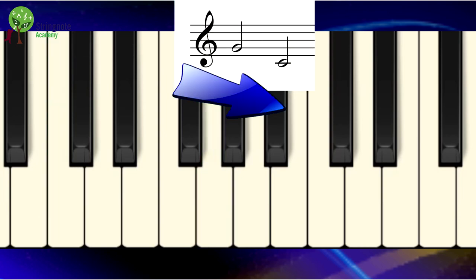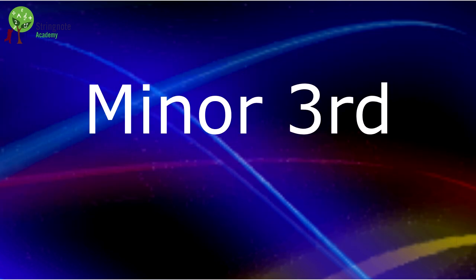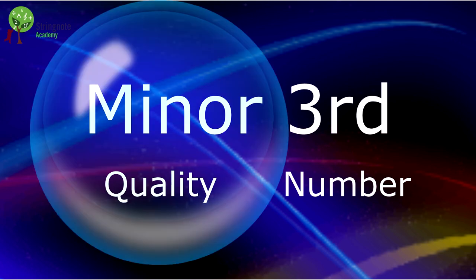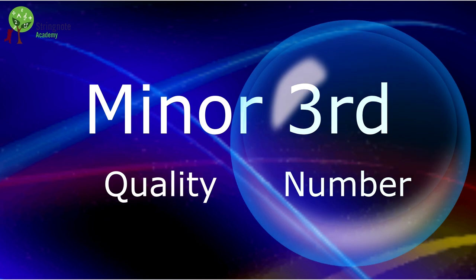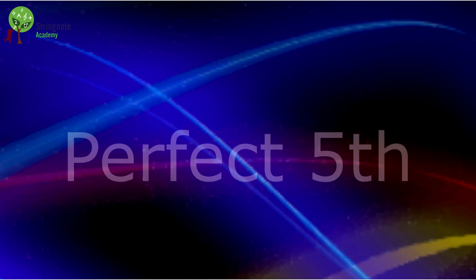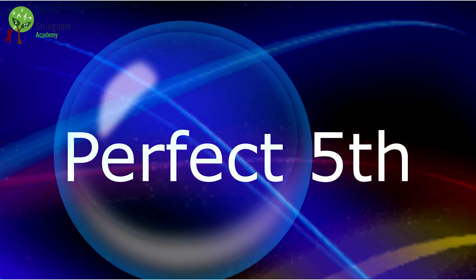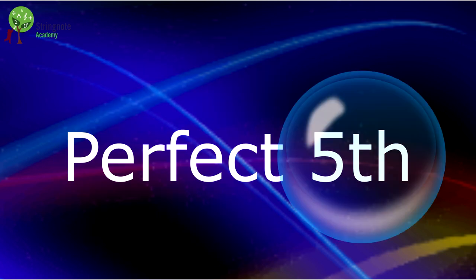The name of an interval has two parts: the quality and the number. When I say minor third, 'minor' is the quality and 'third' is the number. When I say perfect fifth, 'perfect' is the quality and 'fifth' is the number.